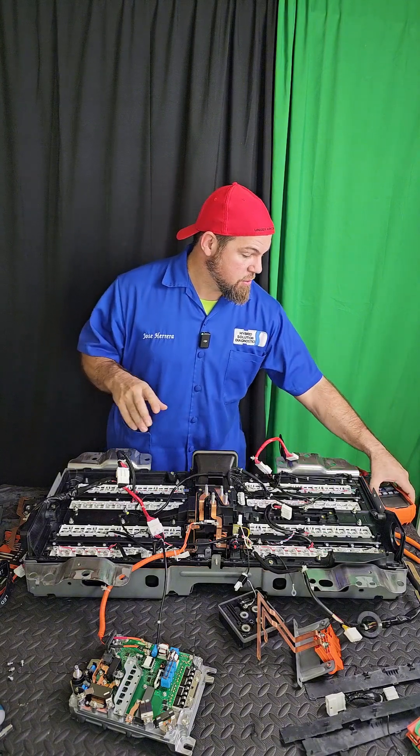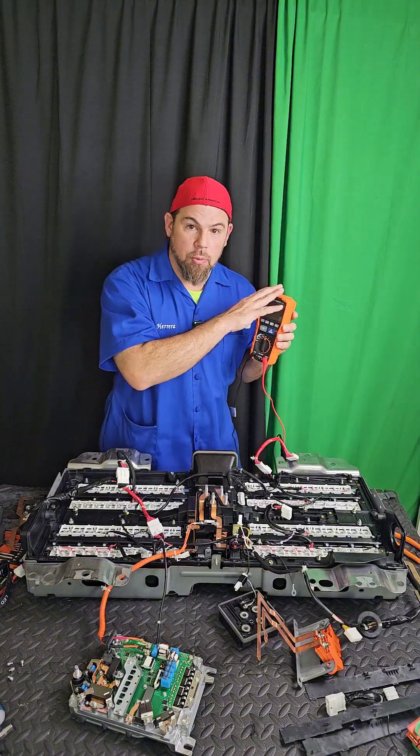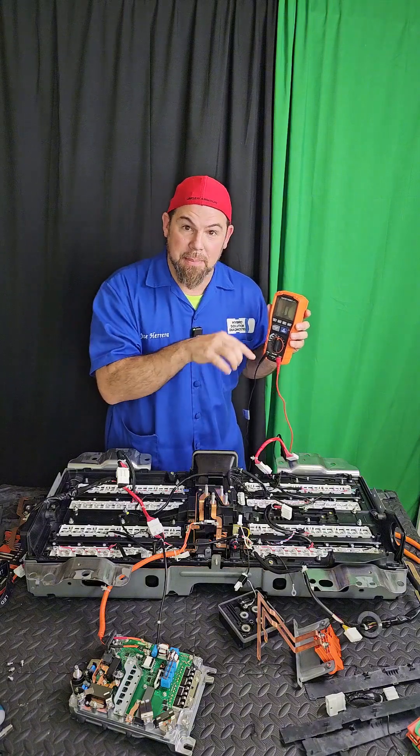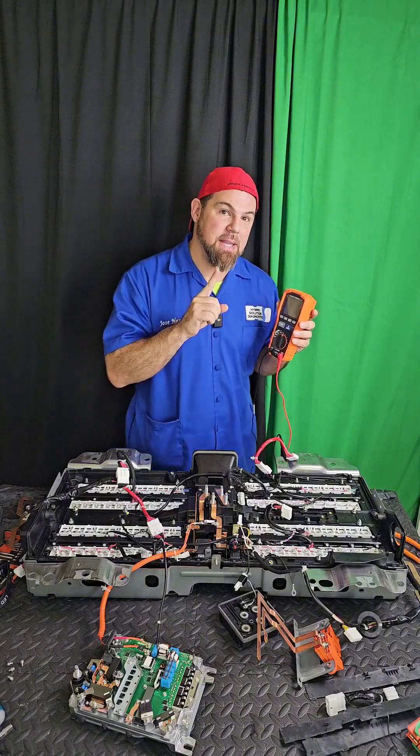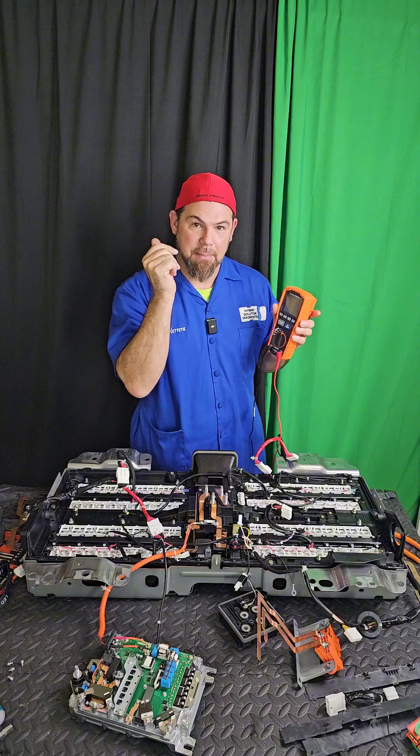So the only way to test this, we're going to have to use our insulation tester. This tool injects high voltage to the battery and makes a connection to chassis ground. If by chance there's high voltage leaking, we will detect it with this immediately.